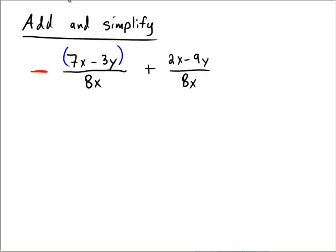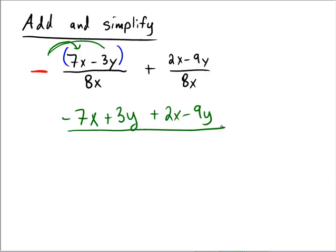In the first stage, we would have negative 7x, and then minus a negative would be plus 3y. Then we're going to add 2x and subtract 9y. The reason I can just combine these is because the denominators are both 8x, so I can leave the denominator as 8x.